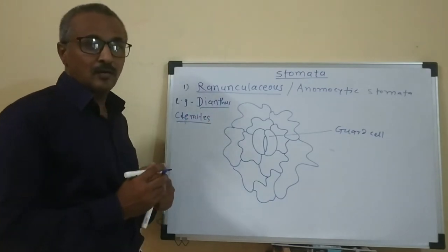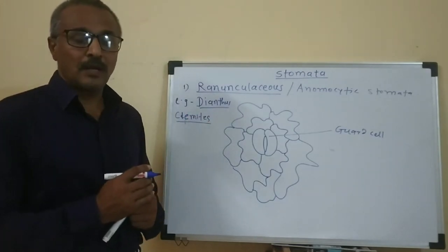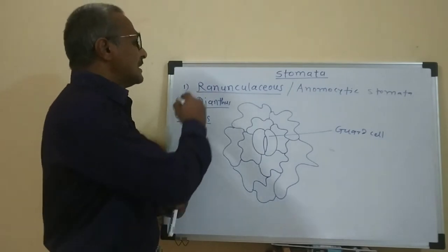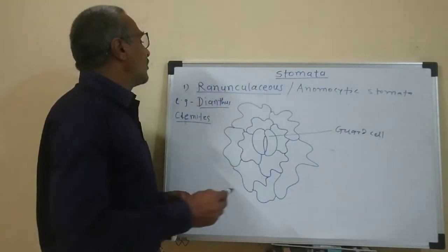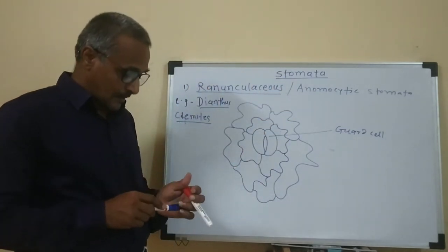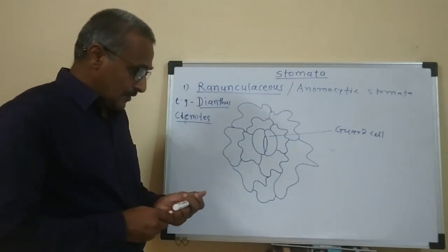Examples include Clematis, Clematis Gloriana, Clematis Superba. So this is the ranunculaceous type of stomata.